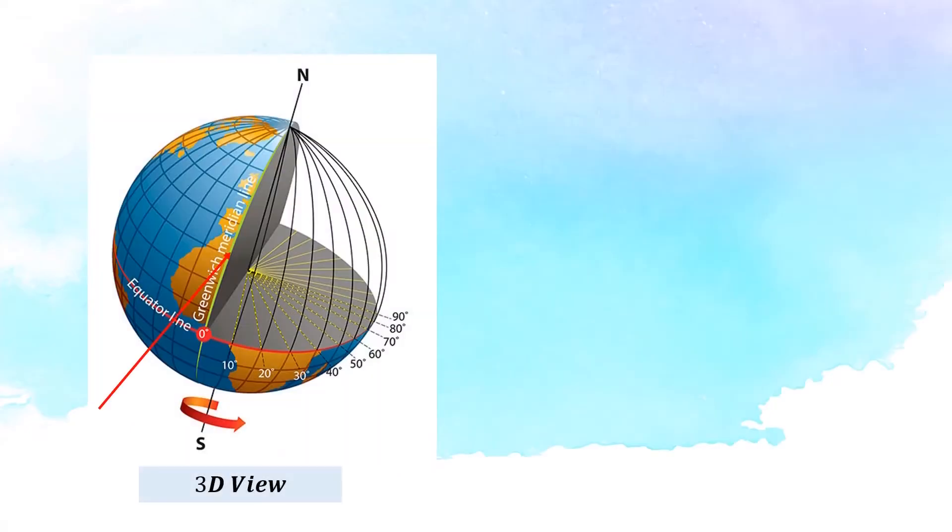On the globe, this line in front of you is the prime meridian, while the line at the back of the globe which is the opposite of the prime meridian is the international dateline.